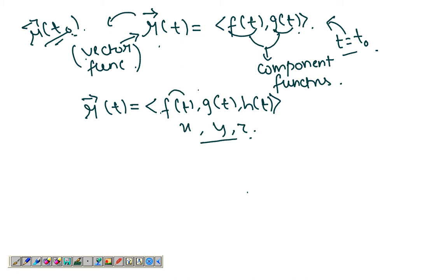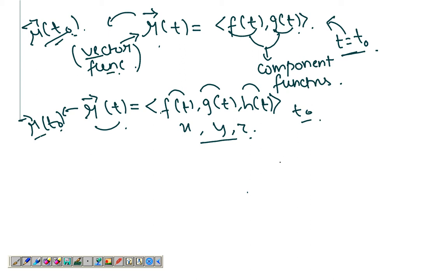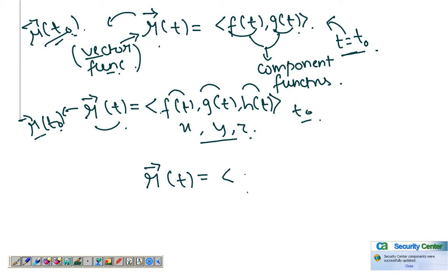The component functions and the vector function work the same way: give it an input value t-naught and it gives you an output r(t-naught) in the form of a vector. Let's take an example — a vector function r(t) equals <t, t²>.